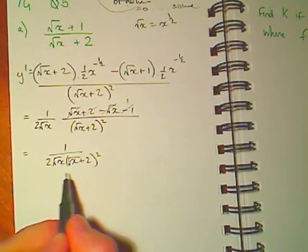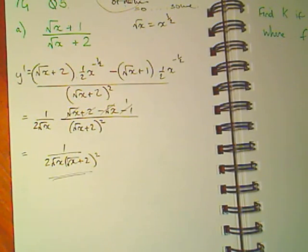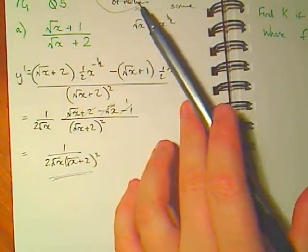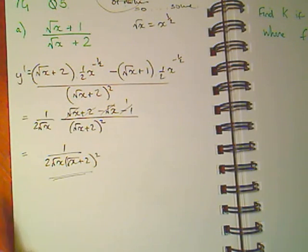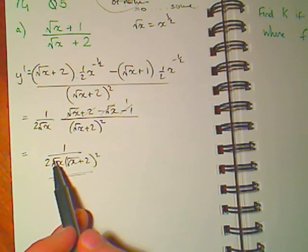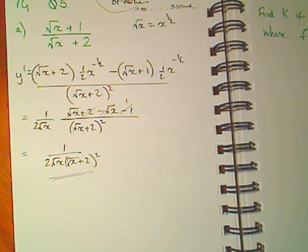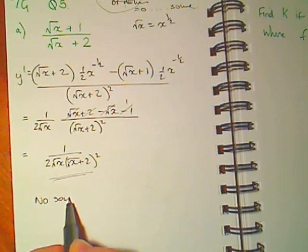We are asked to find, this is our derivative by the way. We are now asked to find any zeros of the derivative. Well, this will only equal zero if the numerator can equal zero. And in this case the numerator can't. So there is in fact no solution.